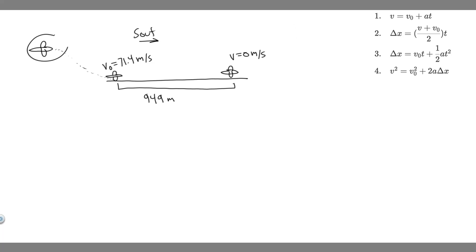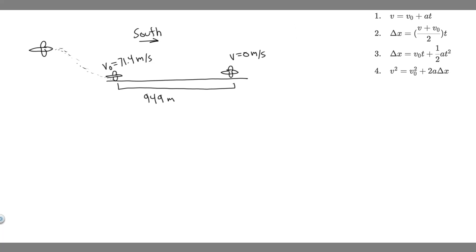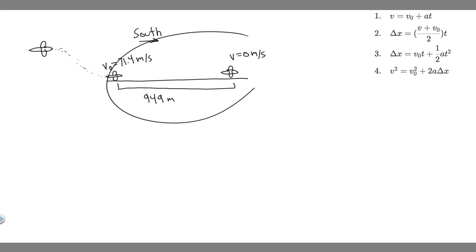So we have this jet — it's going to fly and then land. We know at the point of landing its velocity is going to be 71.4 meters per second. It's then going to travel along the runway 949 meters until it comes to rest, and we know when something's at rest its velocity is 0 meters per second. Keep in mind it's traveling south this entire time.